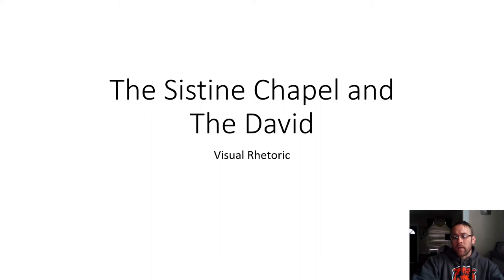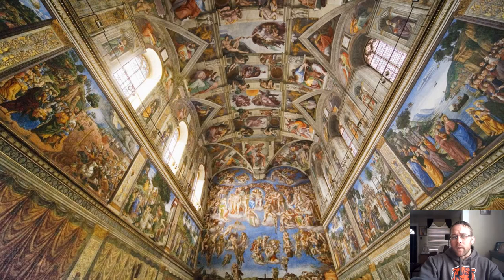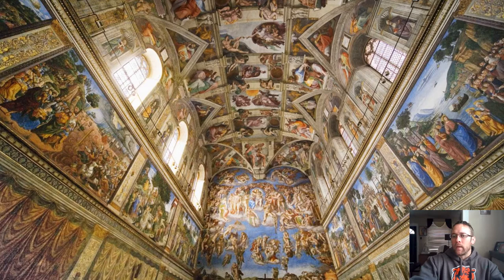Today we're going to talk about the Sistine Chapel as well as the David. We'll make this brief, and then our next PowerPoint will go into more contemporary artistic pieces. This is a picture of the Sistine Chapel — ceiling, walls, everything is just painted. It took several years to put together. You can walk in, look up, and the impossibility of it all hitting you is sort of the first thing. The more you know about the stories being told through these paintings, the longer you can stay and really read into them.